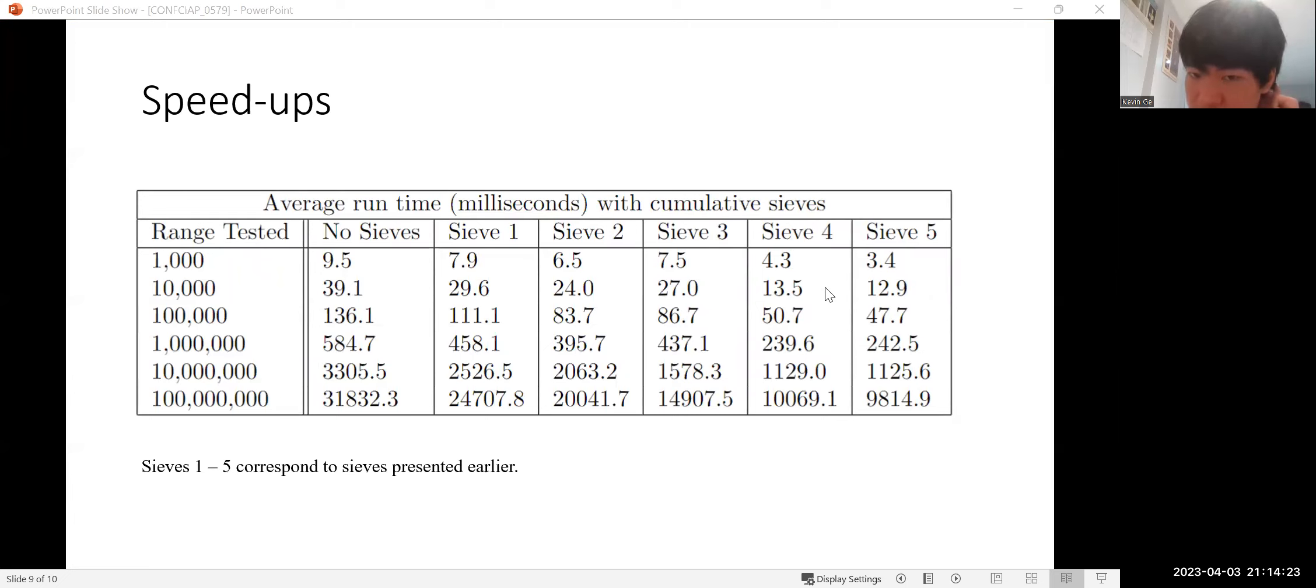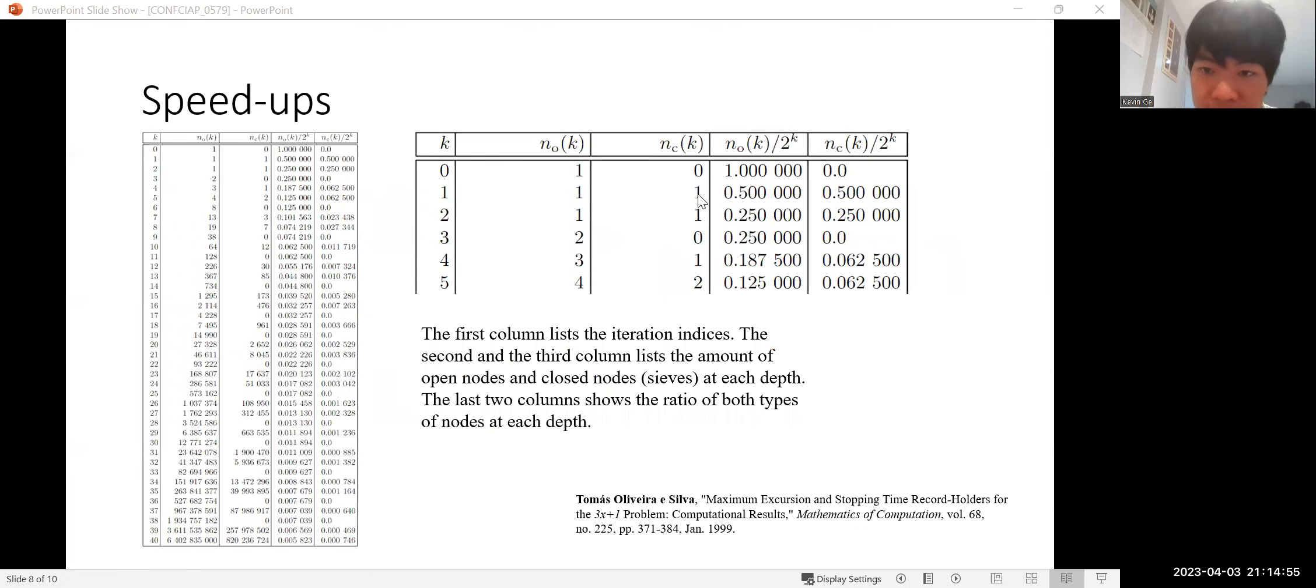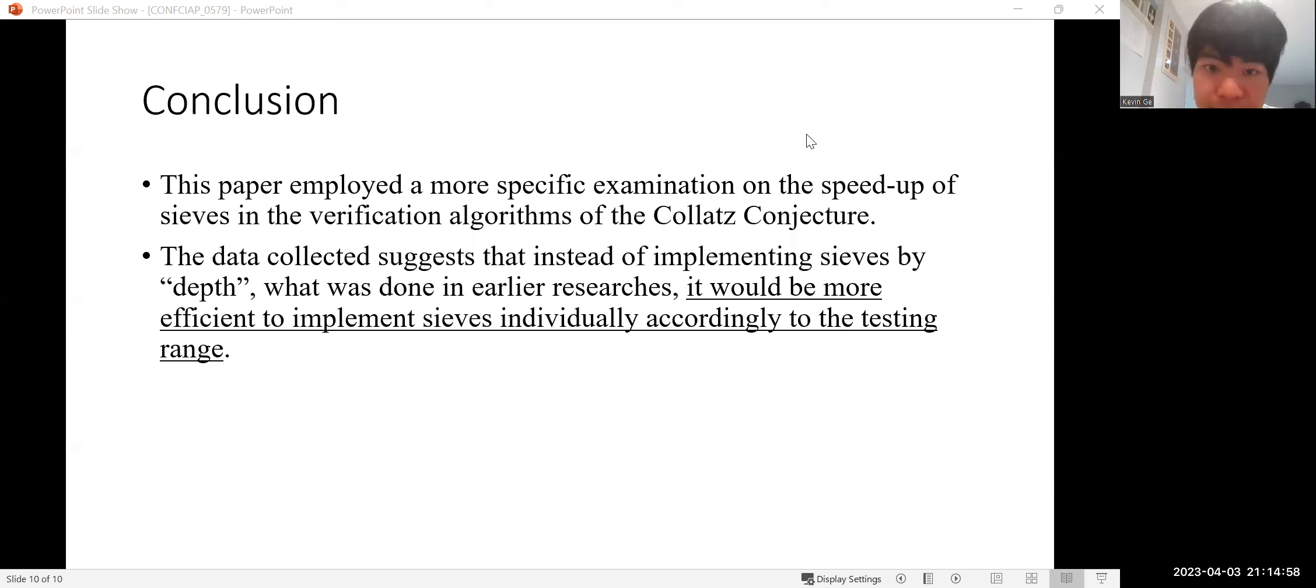So there's some surprising patterns. So, for example, with sieve 3 implemented, it actually takes more time for the case of 10,000 testing cases. And this actually goes up to 27 milliseconds from 24 milliseconds. And what this tells us is that if we test the sieves individually, we might get some different results from just comparing them per level. And thus, this paper shows that maybe it is more efficient to implement the sieves individually according to the testing range.